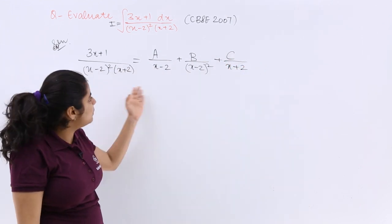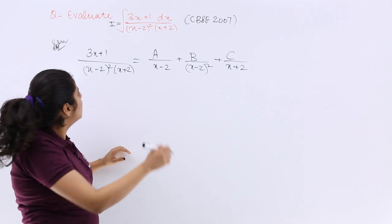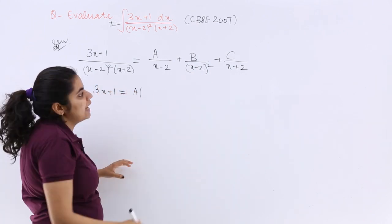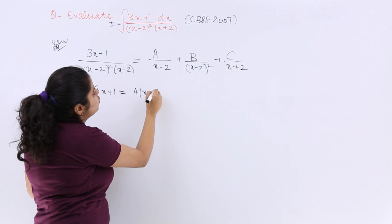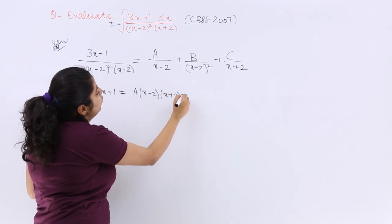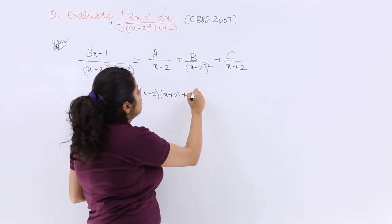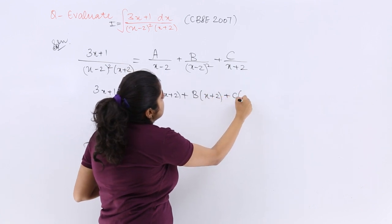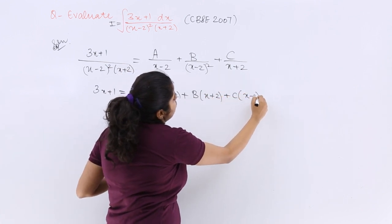Now let me solve by taking the LCM. So here it is 3x plus 1 equals A times (x minus 2)(x plus 2), you know how to take the LCM, right? Plus B(x plus 2) plus C(x minus 2) whole square.